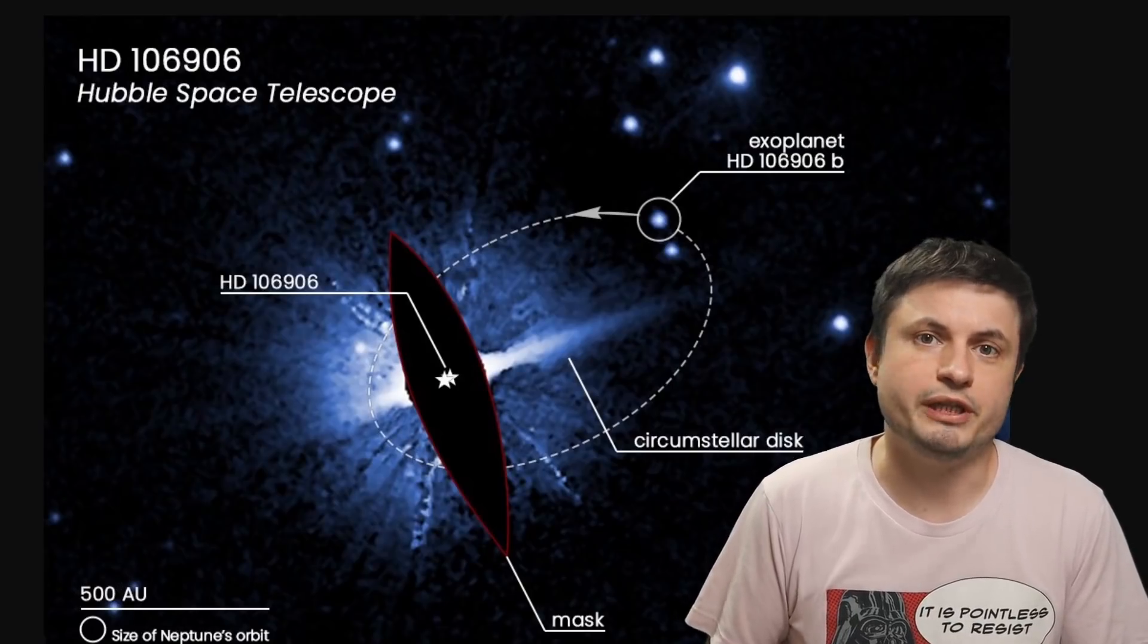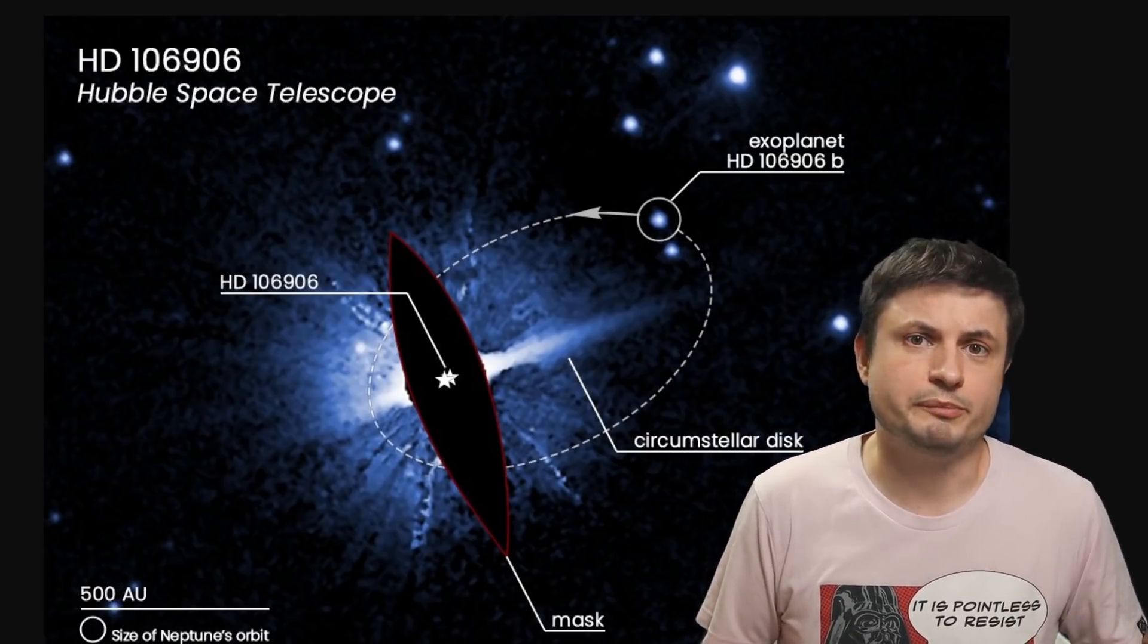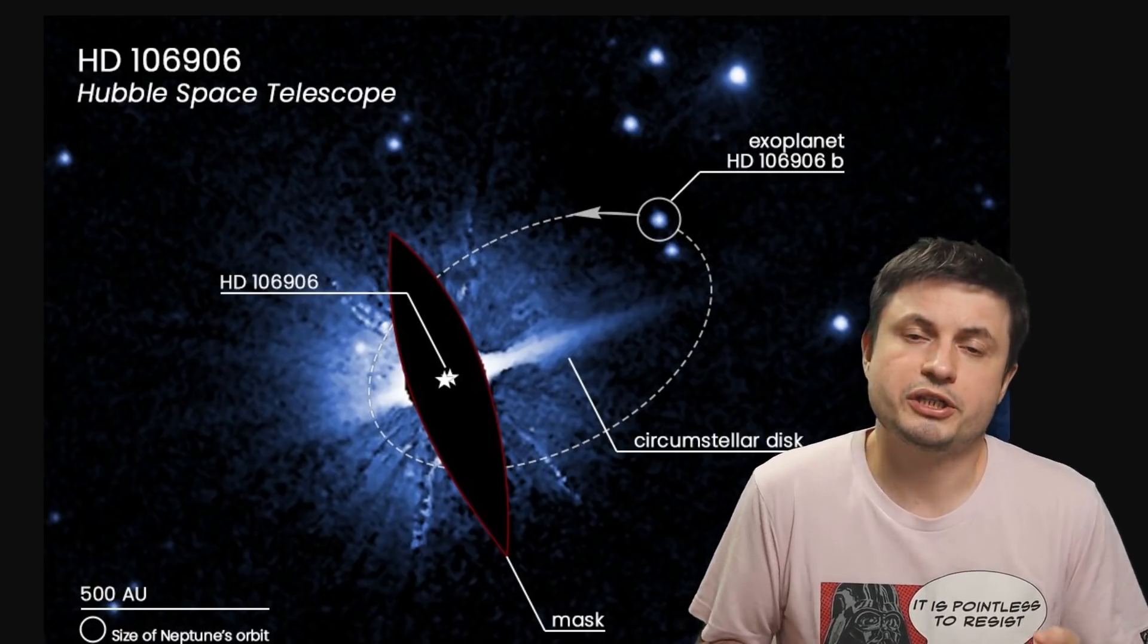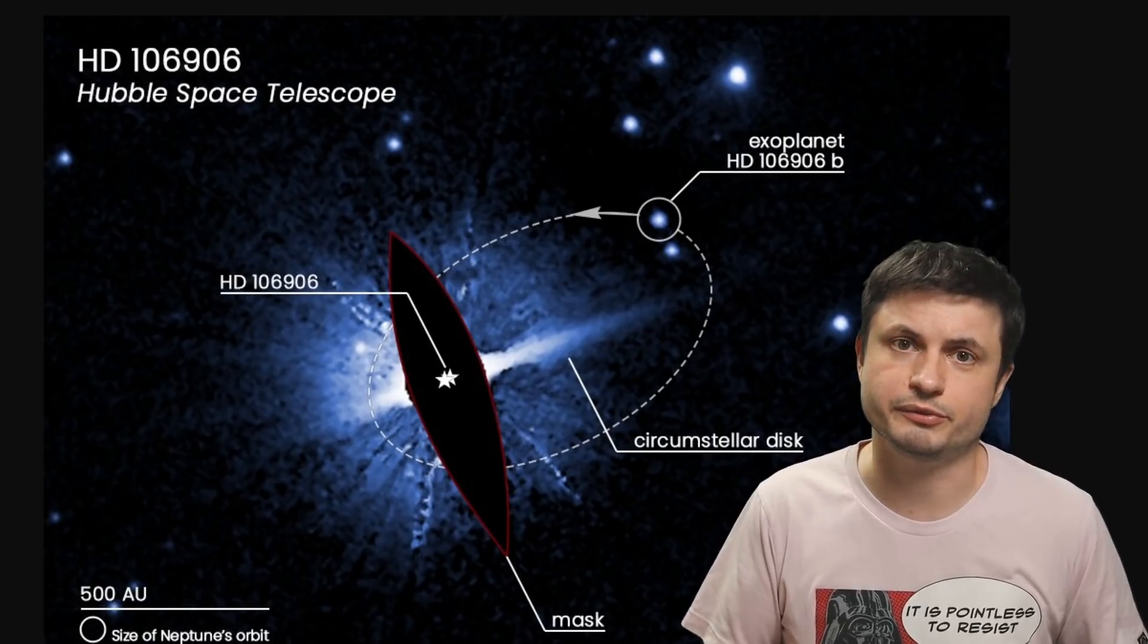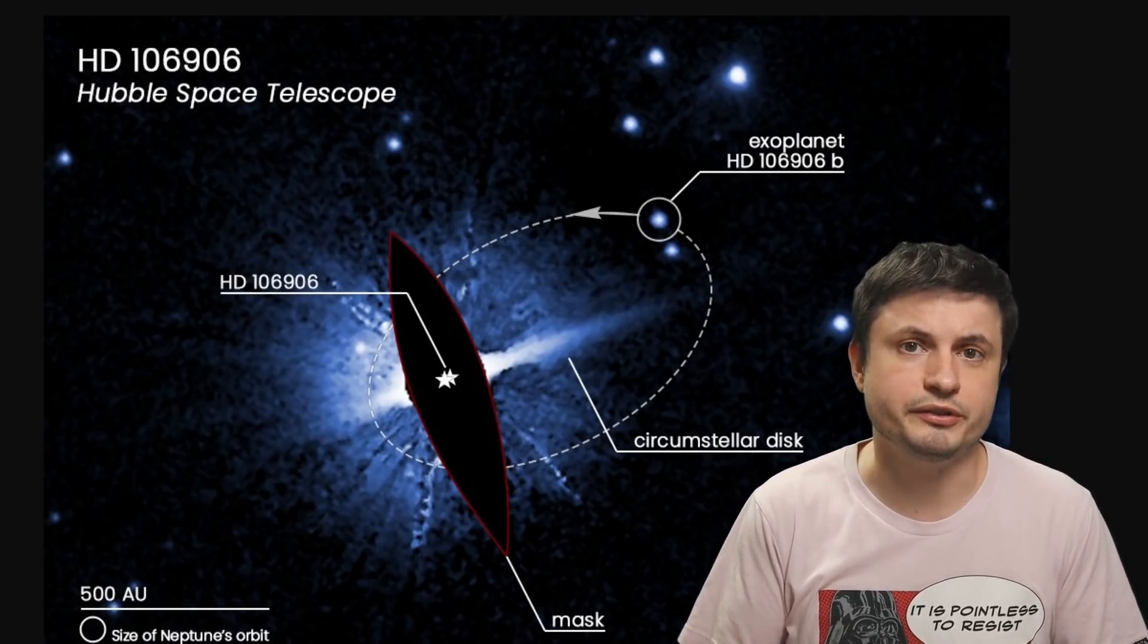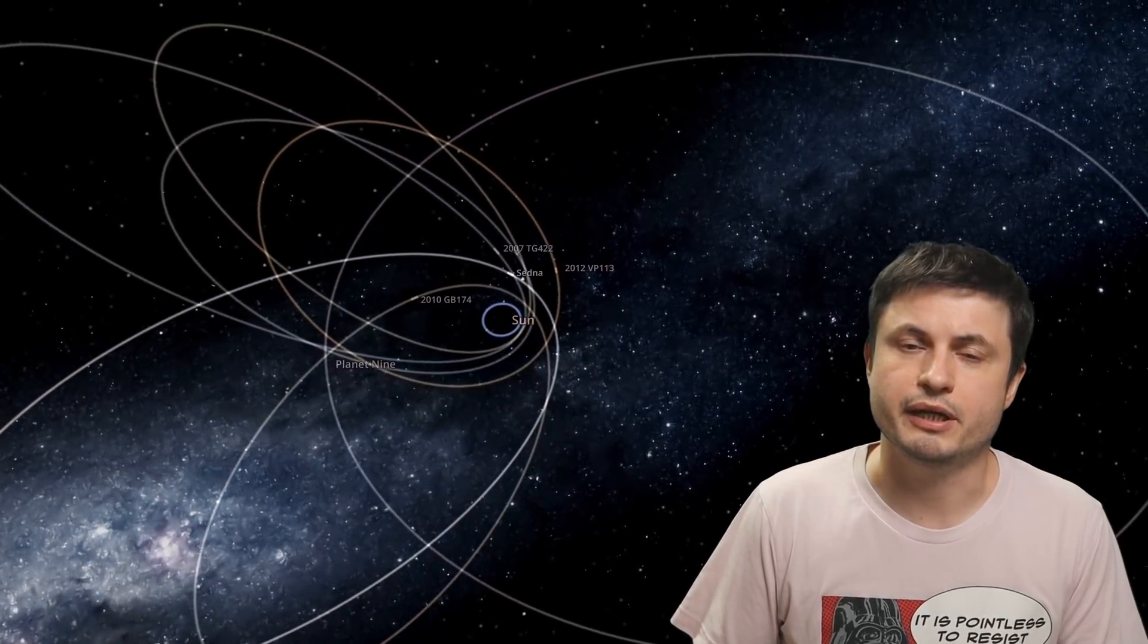This planet, whose name you see on the screen right there, though maybe very different from what we expect Planet 9 to be, could actually help us explain how such planets are formed in other star systems. So let's talk a little bit more about this, but first a quick reminder of why we even believe that Planet 9 might be out there.